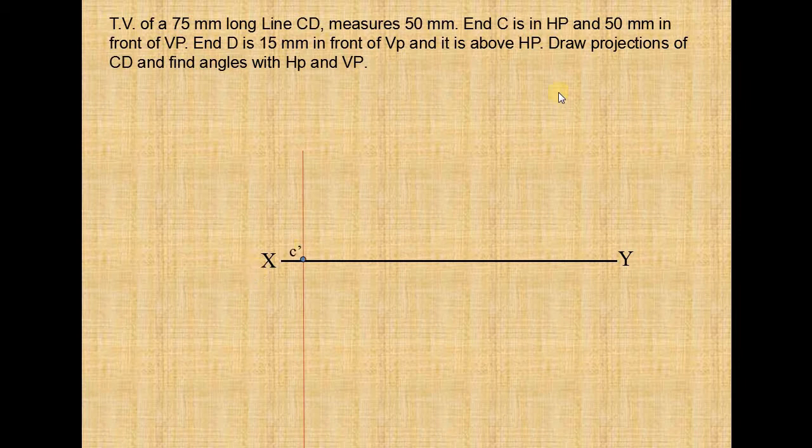Like this. Now C is 50mm in front of VP. Locate the point at a distance of 50mm like this to this line and name this point as C.